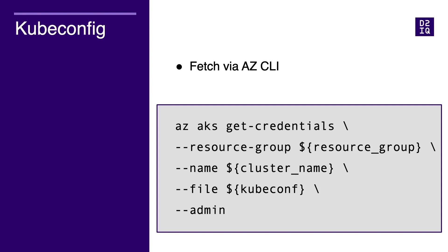The command here will have to be filled in with specific details to replace these variables, but in essence you'll do an AKS get-credentials, provide the requisite resource group name, and then put a file, which is where the contents of the kubeconfig will be written. The --admin flag at the bottom is just so that we have the highest administrative rights for our context in our kubeconfig.